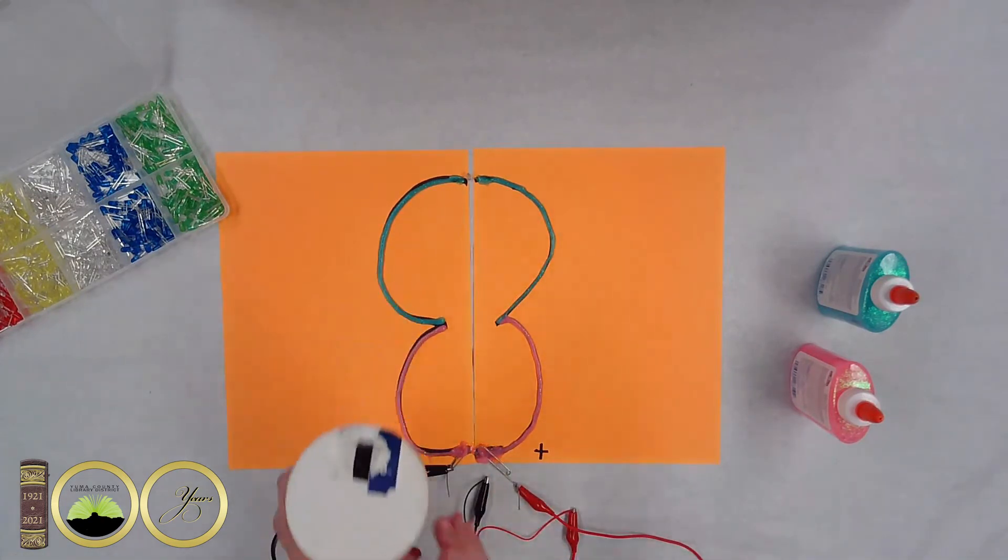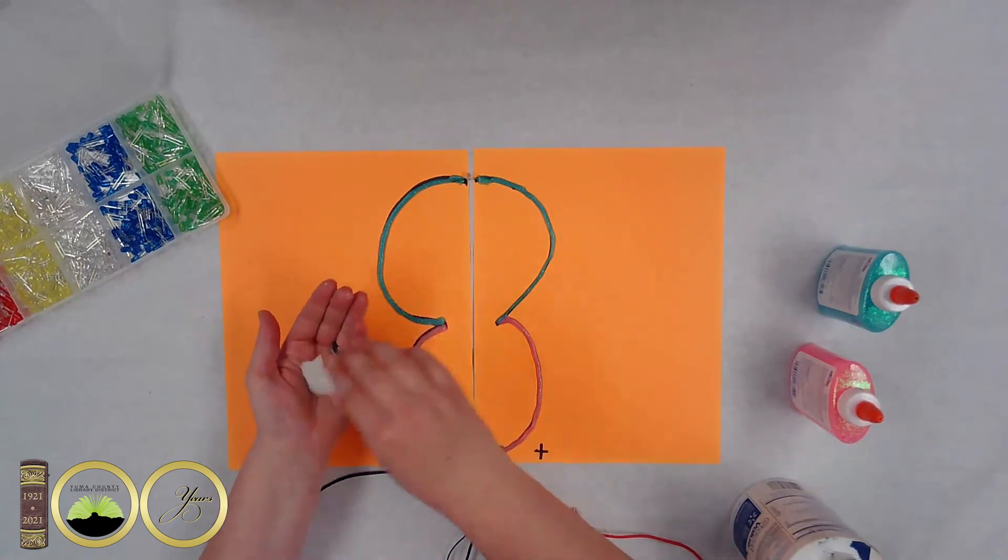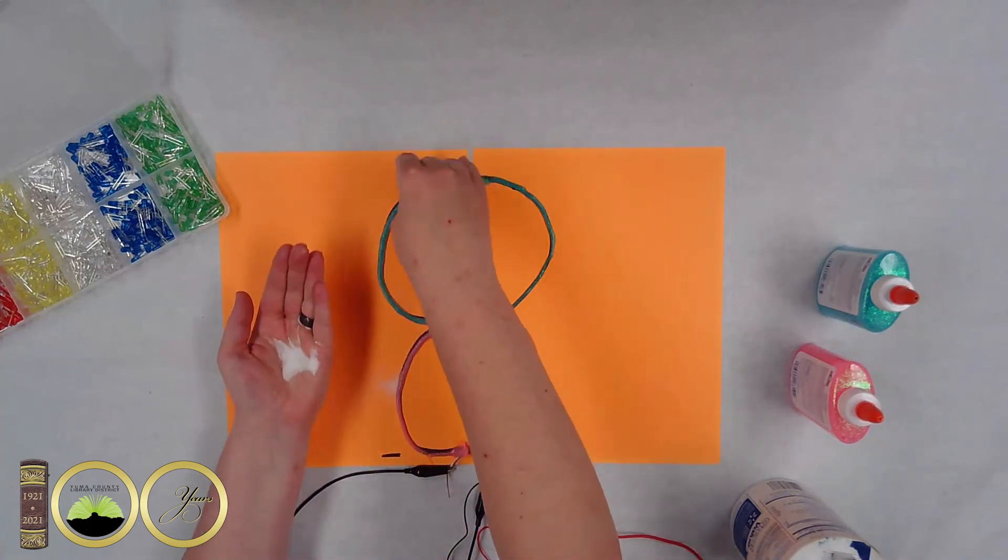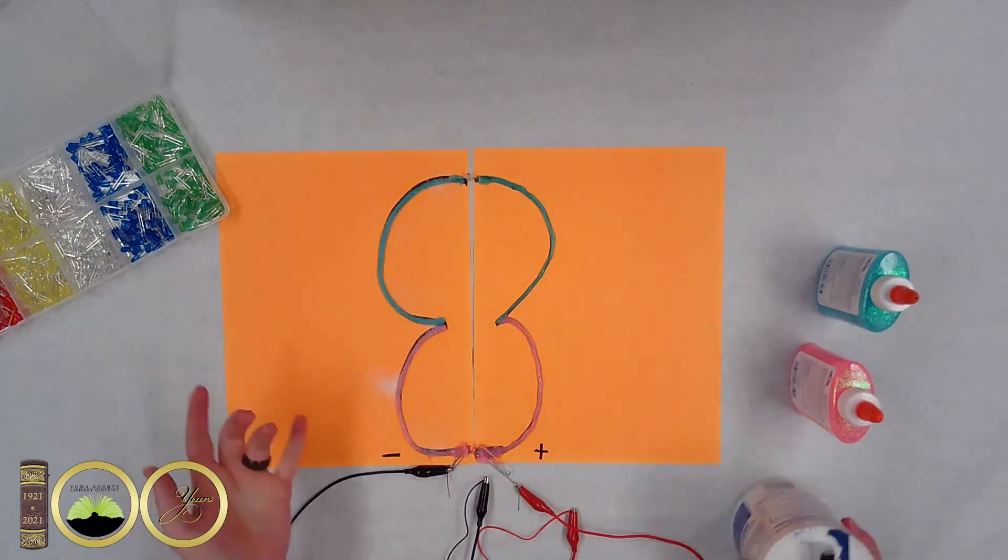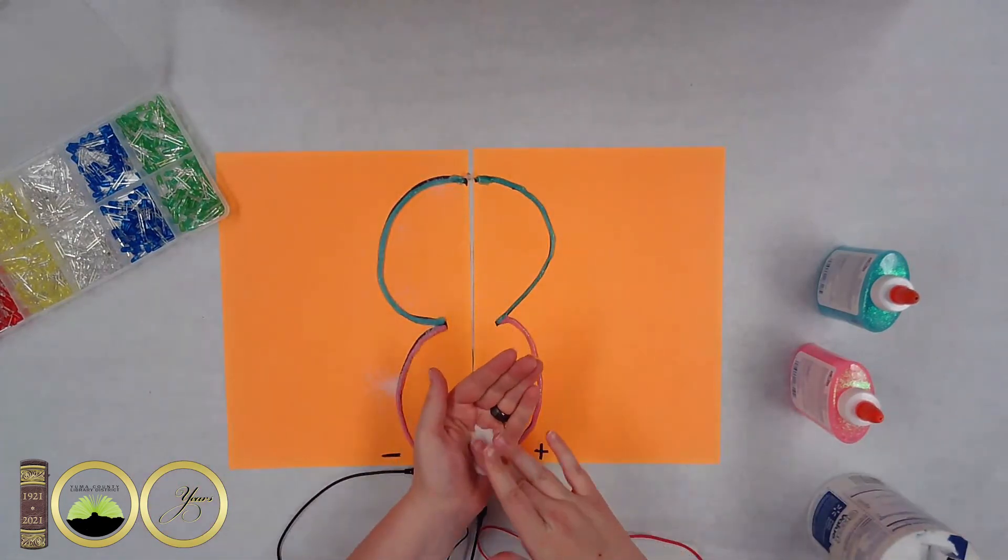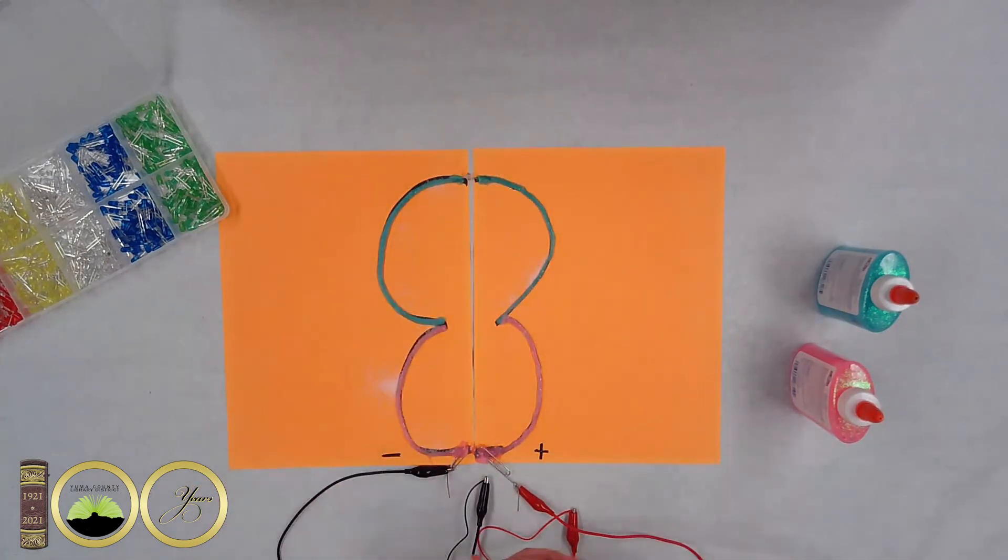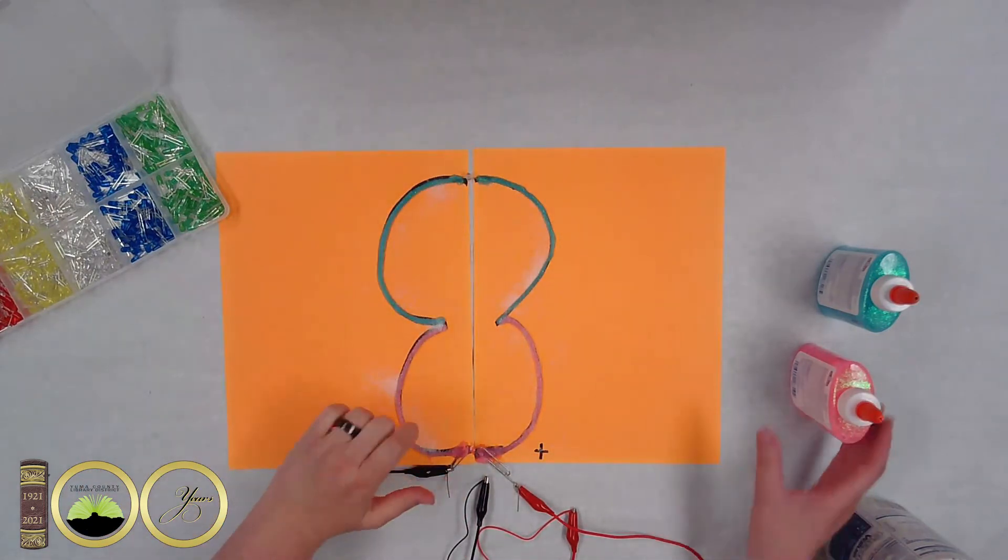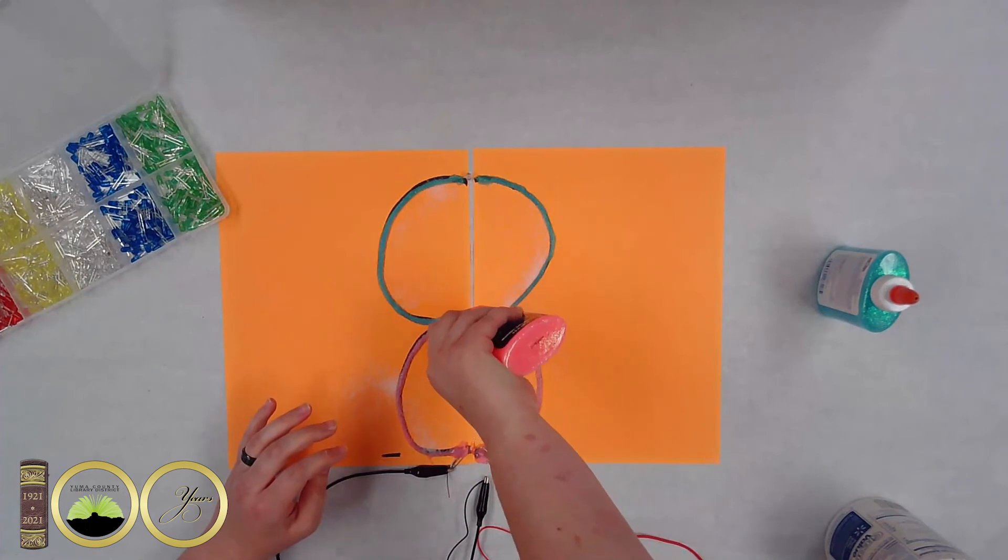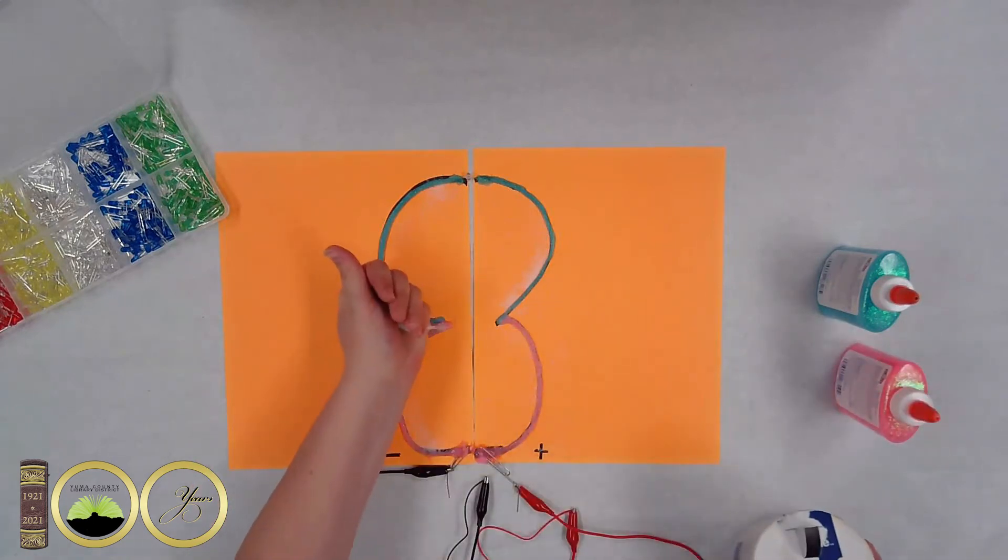Once you have everything hooked up you can go ahead and sprinkle your salt on top of the glue. I just put some on my hand and sprinkled it over. So as you're sprinkling the salt over and if you notice that your circuit is not lighting up there is a couple of troubleshooting things you can do. If it's not powering up right away you can go ahead and add more glue to thicken your lines which you'll see that I had to do because my circuit wasn't turning on right away. So I kind of went in with the glue and thickened the lines. Once you thicken the lines up with some glue you'll have to put more salt on top.